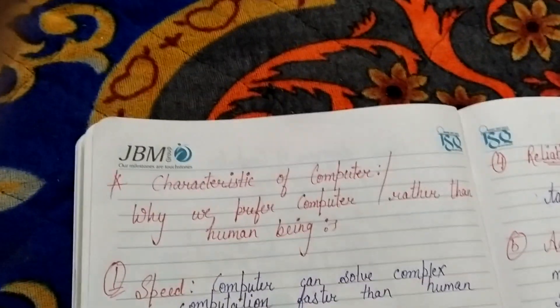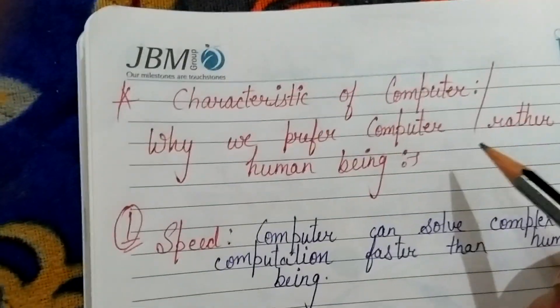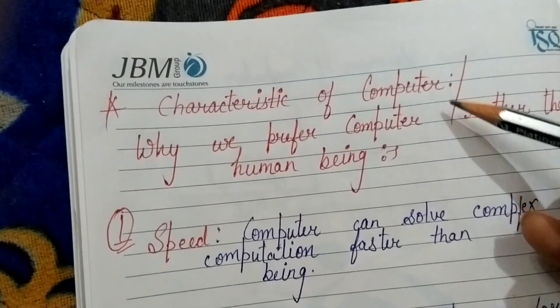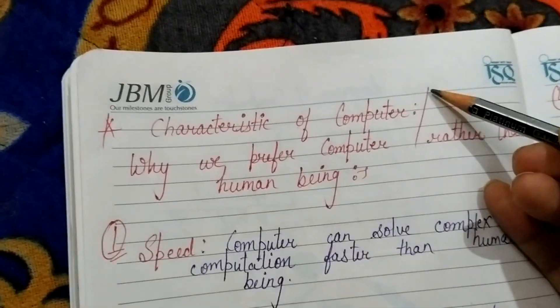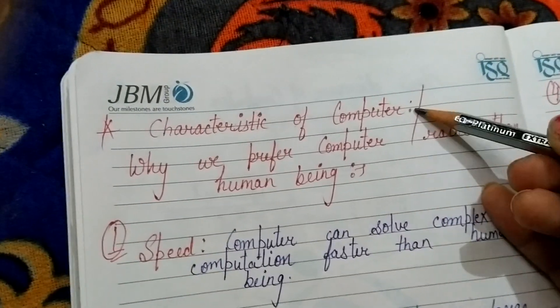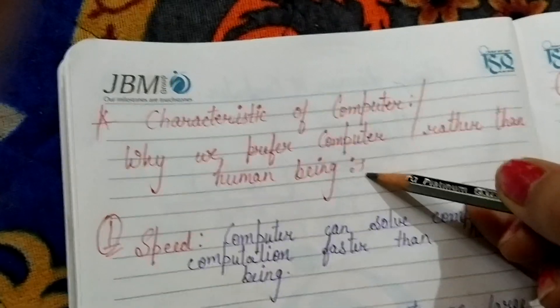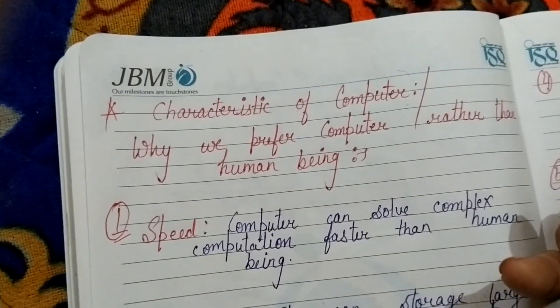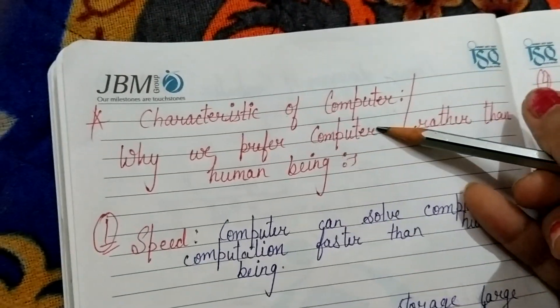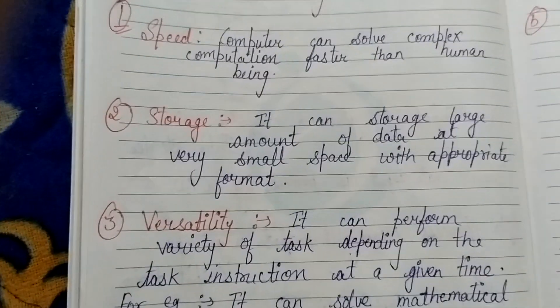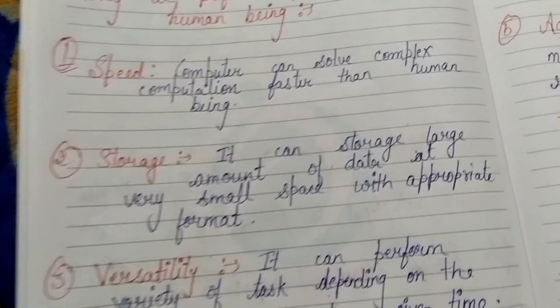Now we move on to the next point that we studied: characteristics of computer. This question can come in two types. I read the question—if the examiner wants to twist it, it could be: why we prefer computer rather than human being? If we have to get work done and we have two options—one human being and the other computer—why do we prefer computer? These are some points that are the characteristics of computer.